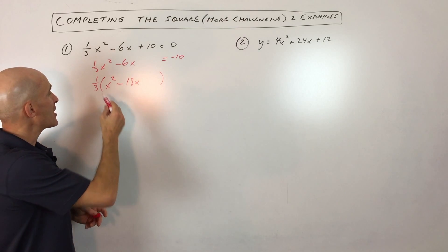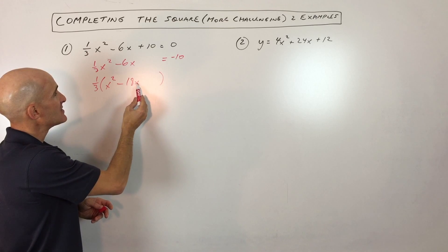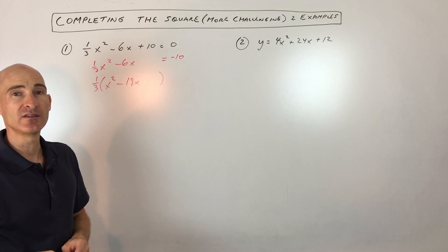The nice thing is you can check your answer. If you just distribute the one-third into the parentheses here, one-third times negative 18x gives you back the negative 6x. So you know you haven't changed the problem, you've just changed the way that it looks.